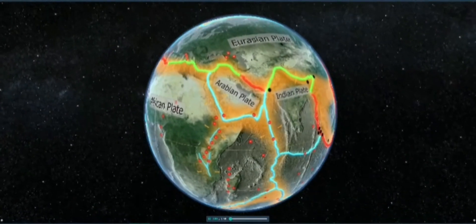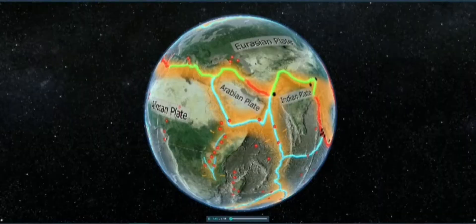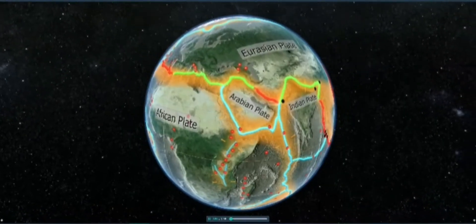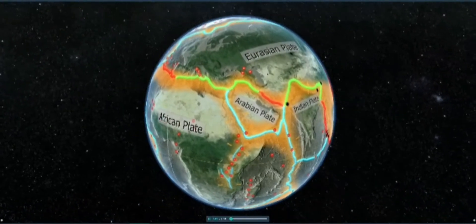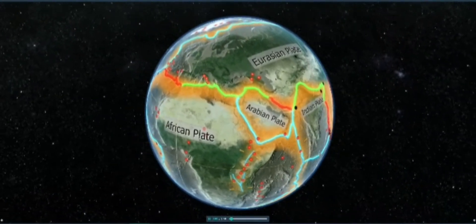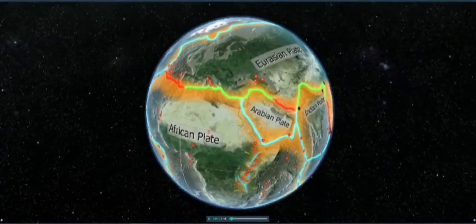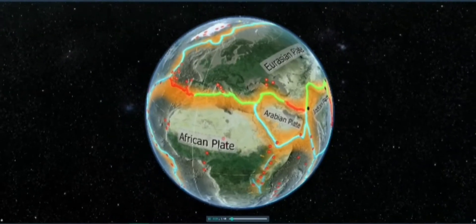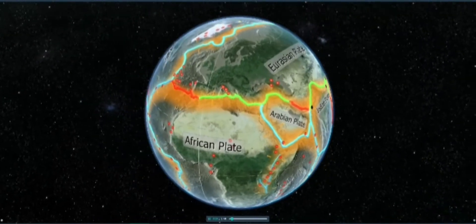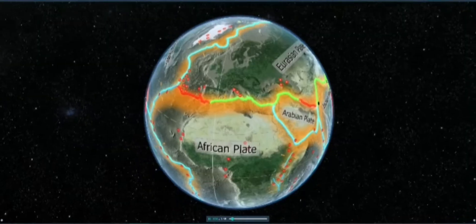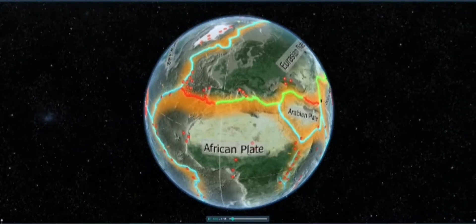Volcanic activity is a process of magma being ejected to the surface of the Earth, out of its crust. Volcanoes do not occur at random. They form long chains, which are essentially the boundaries of tectonic plates.